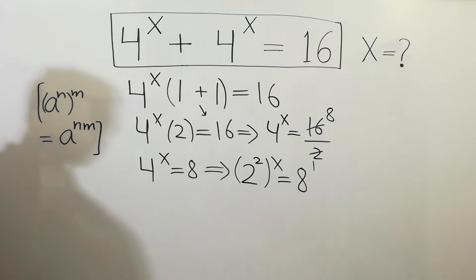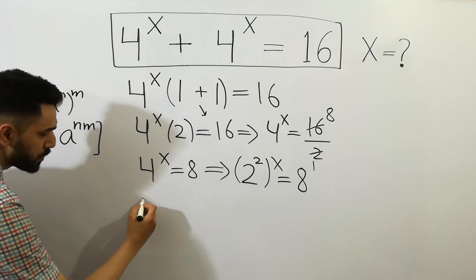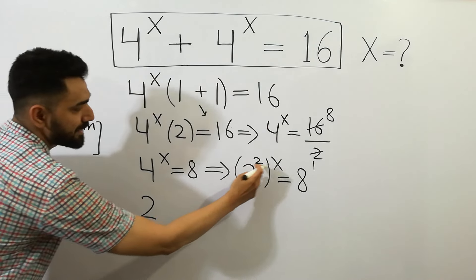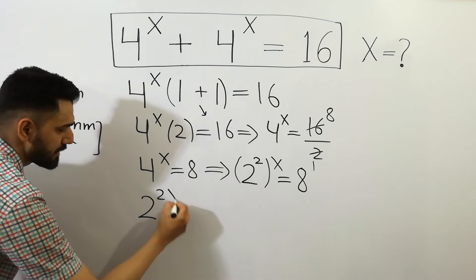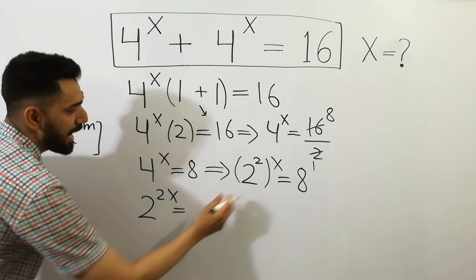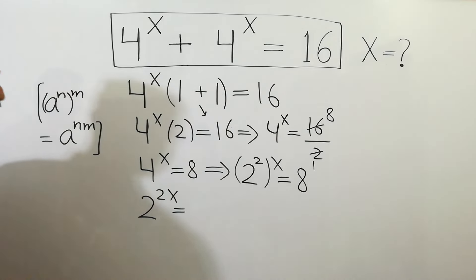So we can write 2 to the power 2x equals 8.